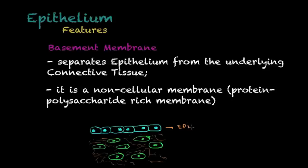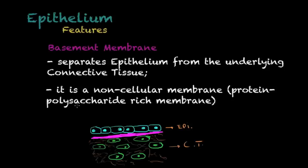In this illustration you can see epithelial cells resting upon connective tissue cells. A very important feature is the structure that exists between these two tissues, called the basement membrane. This is what separates the epithelium from the underlying connective tissue. It is important to know that this is a non-cellular membrane — it is not comprised of any cells — and it is a protein and polysaccharide-rich membrane.